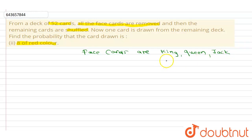Now we know that in a deck of 52 cards there are 4 Kings, 4 Queens and 4 Jacks. Therefore 12 cards in total are removed.